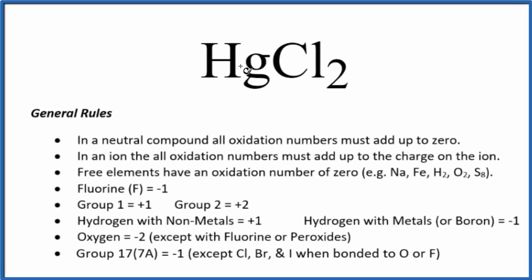In this video, we'll find the oxidation numbers for each element here in HgCl2, mercury-2 chloride. We notice first there's no negative or positive sign after the compound, so this is a neutral compound. All the oxidation numbers are going to add up to zero.